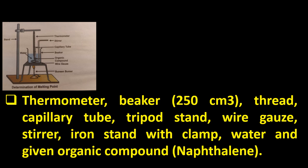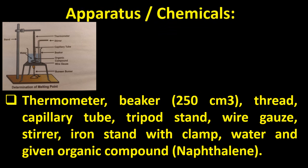Now let us name the apparatus for this. We need thermometer, beaker (250 ml), thread, capillary tube, tripod stand, wire gauge, stirrer, iron stand with clamp, water, and the given organic compound which is naphthalene. You have to write these in your paper with separate headings: apparatus and chemicals.